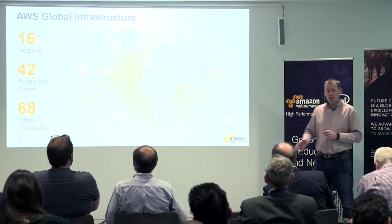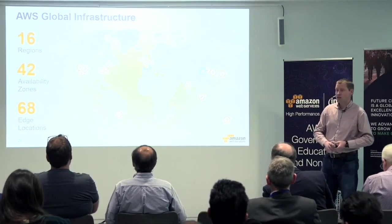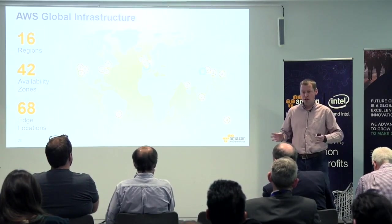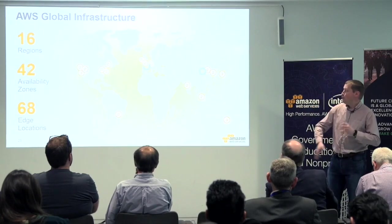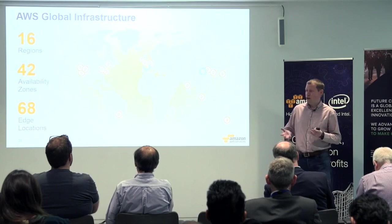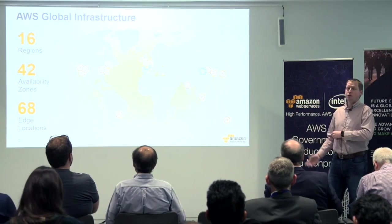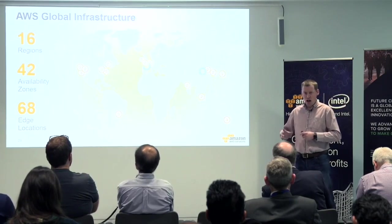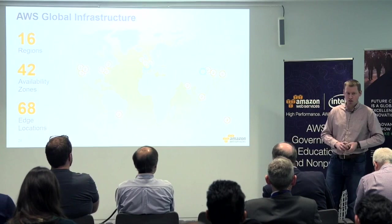Wayne alluded to the fact that we now have the UK region. Globally we have 16 regions, and I'll talk a little bit about what we mean by a region, because it's slightly different from what other people might define. Within those regions we have something called availability zones, and there are currently 42 of those. And we have edge locations, where we deliver some of our global services like our DNS, our content delivery network, and content acceleration services.